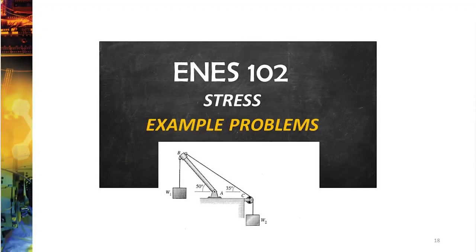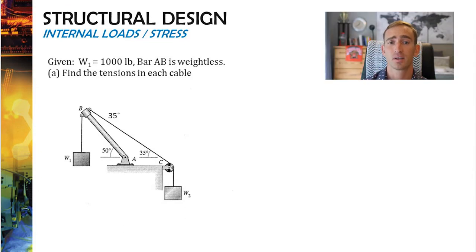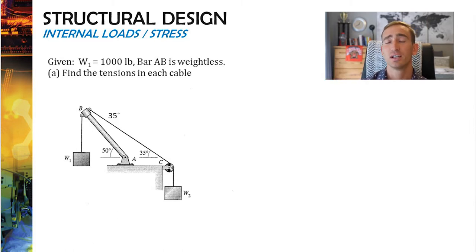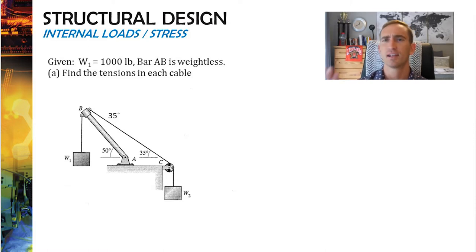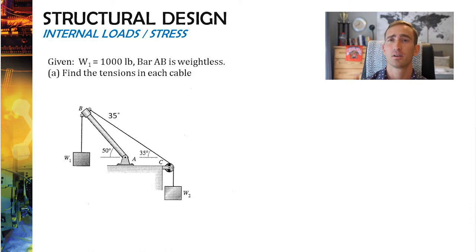Let's do a couple of example problems. We have a beam AB with two cables: one holds weight W1 on the left, and the other goes through a pulley to redirect force to a cable holding W2. The beam is inclined at 50 degrees and the rope on the right is inclined at 35 degrees to the horizontal. Given W1 is 1,000 pounds and bar AB is weightless, we're asked to solve for the tensions in the cables. Take 15–20 seconds to think about how you'd approach this — the tension on the left is easy, but how do you solve for the tension on the right?